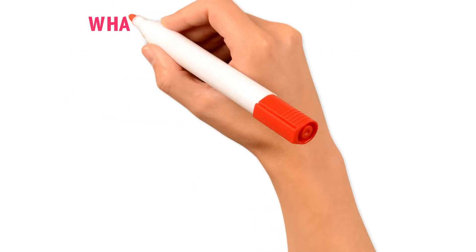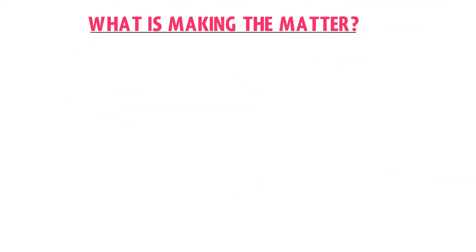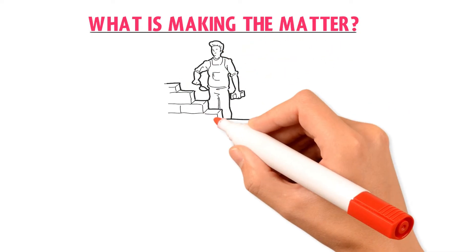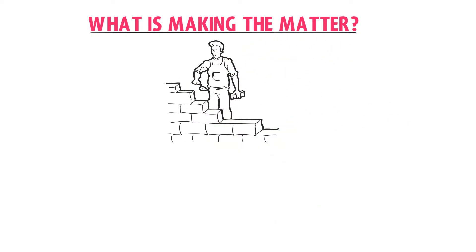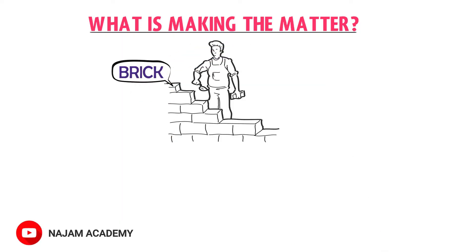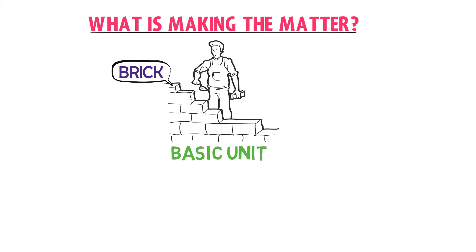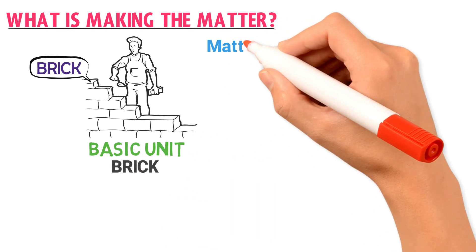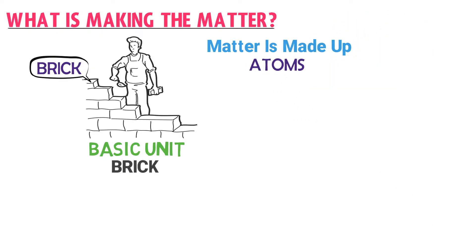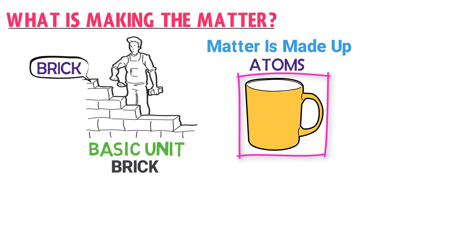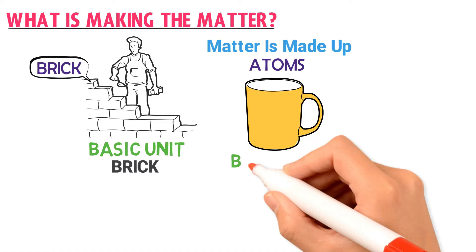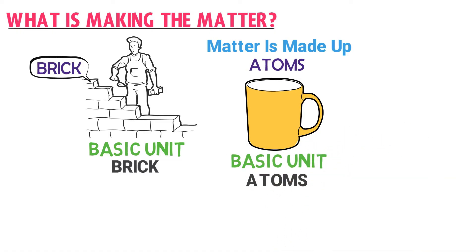The important question is: what is making the matter? To understand this, ask what is making the wall. The answer is it is the brick that is making the wall — the basic unit of this wall or any house is a brick. Similarly, matter is made up of atoms. For example, this cup is a matter and it is made up of millions of atoms. Hence, the basic unit of matter is an atom.